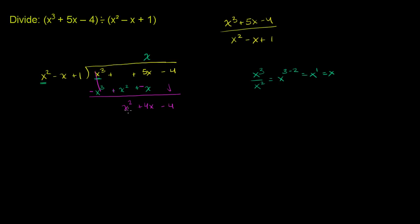Now let's look at the highest degree terms. x squared goes into x squared exactly one time, so we put a plus 1. Then 1 times x squared is x squared. 1 times negative x is negative x. 1 times 1 is 1. Now we want to subtract this from that, or add the opposite — multiply each of these terms by negative 1. x squared becomes negative x squared. Negative x times negative 1 is positive x. And positive 1 times negative 1 is negative 1. Now let's do the addition. x squared minus x squared — they cancel out. 4x plus x is 5x. And then we have negative 4 minus 1 is negative 5.